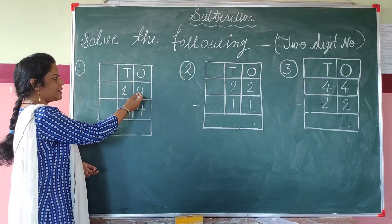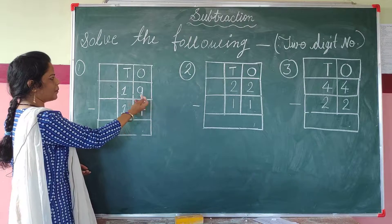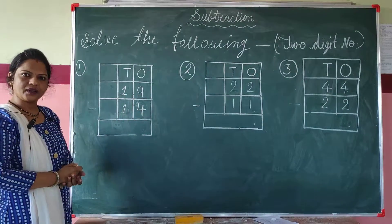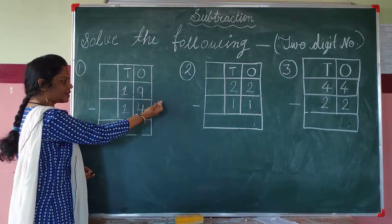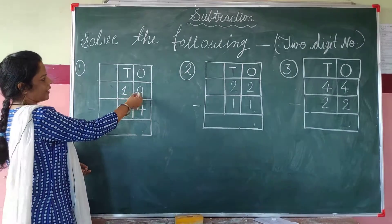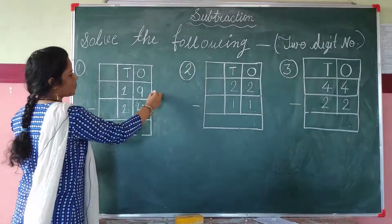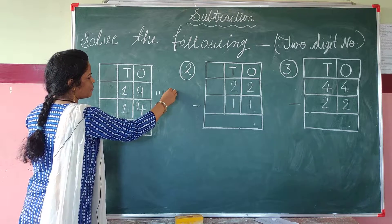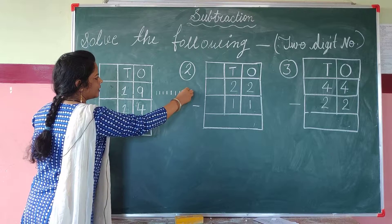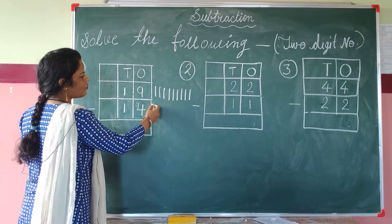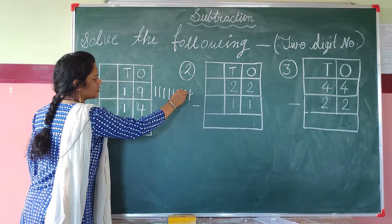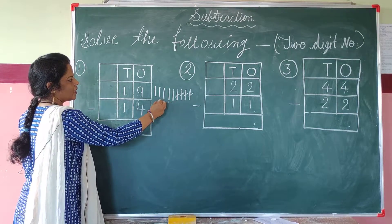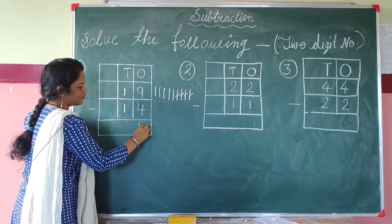Just as in addition we solve from the right, in subtraction too we take the right-hand digit first. In a 2-digit number, it is very important to remember that we solve the 1's place — the right digit — first. 9 is at the 1's place, so we draw 9 lines: 1, 2, 3, 4, 5, 6, 7, 8, 9. Cut 4 lines: 1, 2, 3, 4. How many lines are left? 1, 2, 3, 4, 5. We write 5 at the 1's place.